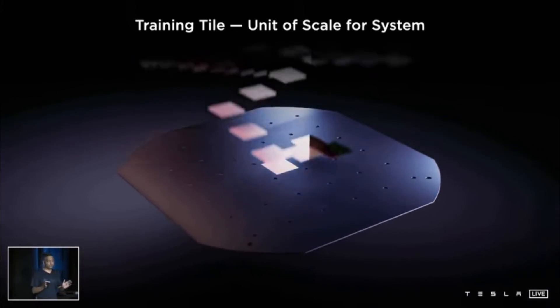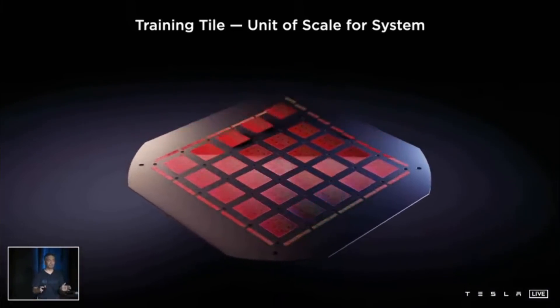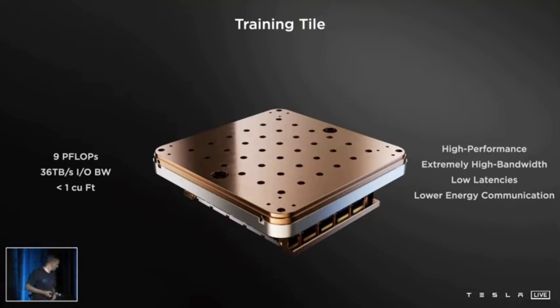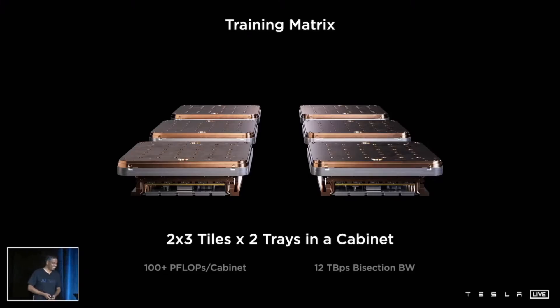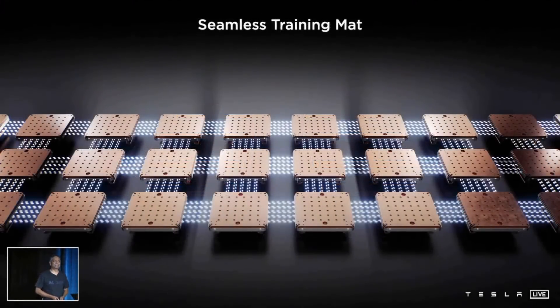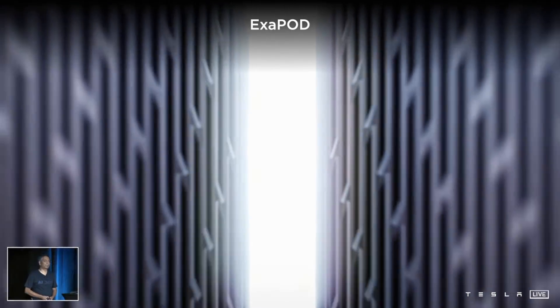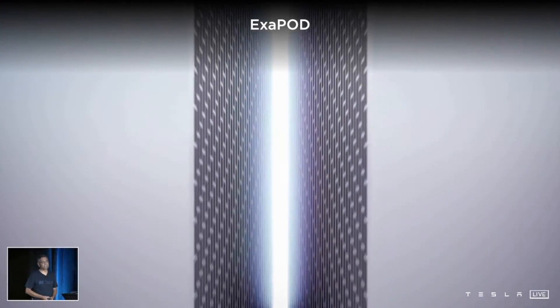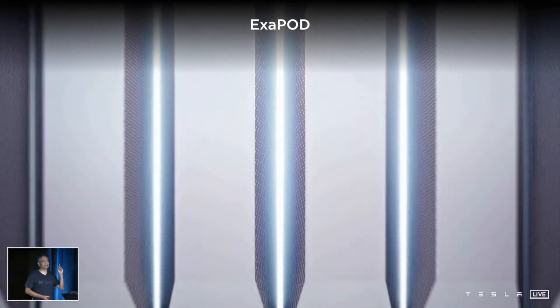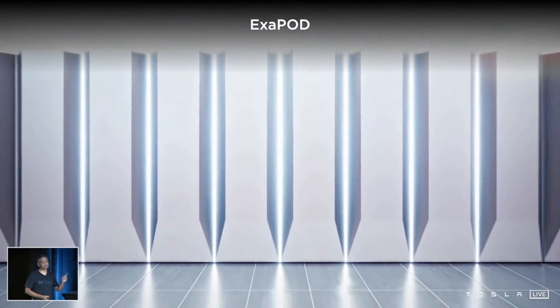One training tile will be capable of nine petaflops of operations per second. And they put together 120 training tiles, giving the Dojo computer one exaflop of operations. Don't worry if you have no idea how fast that is, because I am right there with you.